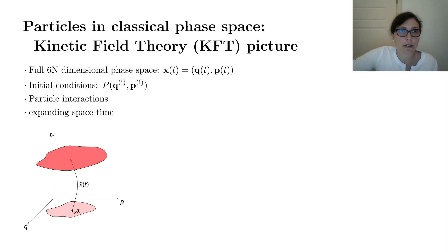The picture that I'm working in is the picture of kinetic field theory and the approach works as follows. We're considering basically particles in classical phase space. So our mathematical object is the full 6n-dimensional phase space coordinate x that collects all the particle positions q and all the particle momenta p. Furthermore, we need some initial conditions that are encoded in a probability distribution. The last two ingredients are particle interactions and the expansion of spacetime. Here on this axis is q, the particle positions, here are the particle momenta. We start with some initial probability distribution, evolve that in time, get a final probability distribution, and this time evolution is governed by the Hamiltonian equations of motion.